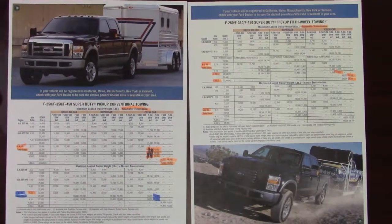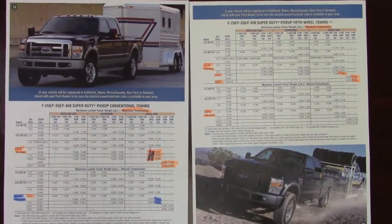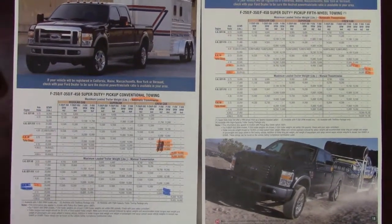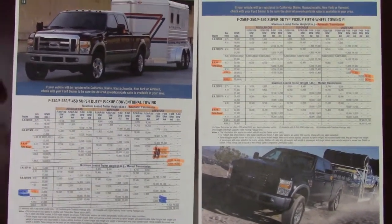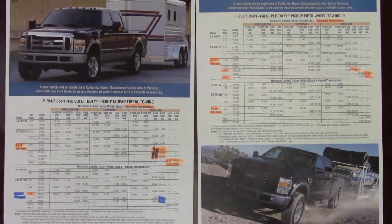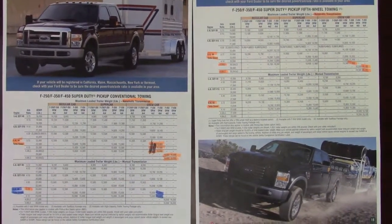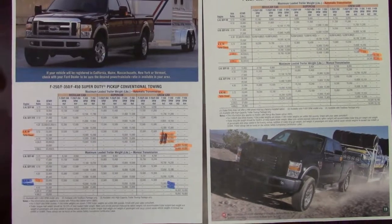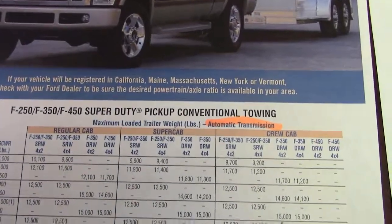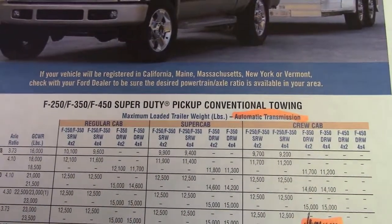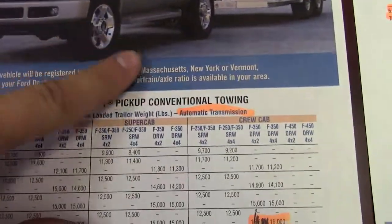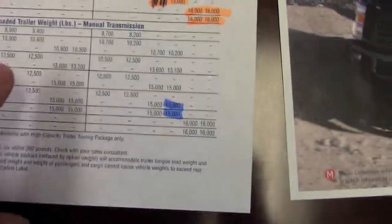I went ahead and printed out these two sheets from Ford Fleet, which is basically an owner's manual for older trucks. They have newer trucks on there too, and it tells you things like your towing data, your wiring for your upfitter switches, and all sorts of stuff. It's great information. If we dive into this first one, this is for conventional towing — bumper pulls — and you have automatic transmission and manual transmission.